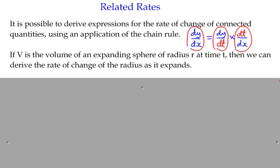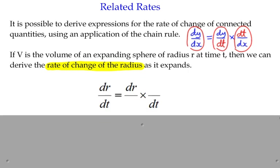Here's a scenario. If V is the volume of an expanding sphere of radius r at time t, then we can derive the rate of change of the radius as it expands. The first thing is to work out what we're trying to get - the rate of change of the radius dr/dt. We create this calculation with dr as the numerator and dt as the denominator, and we have to introduce another variable depending on the information we've got.